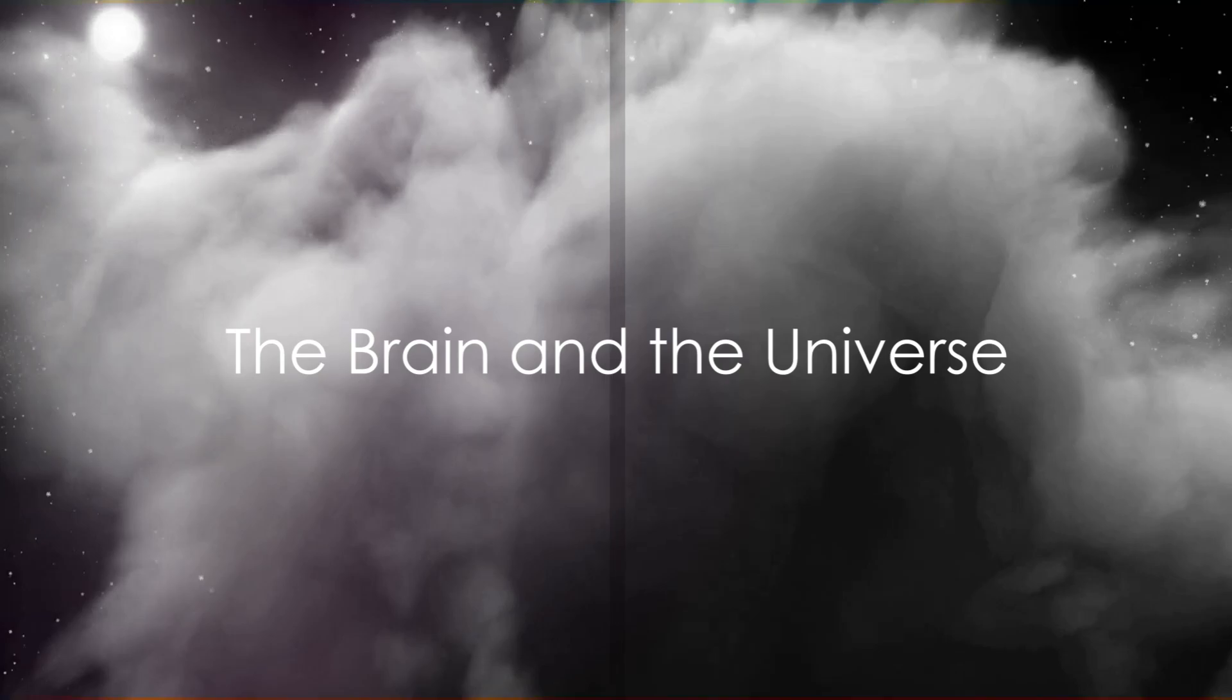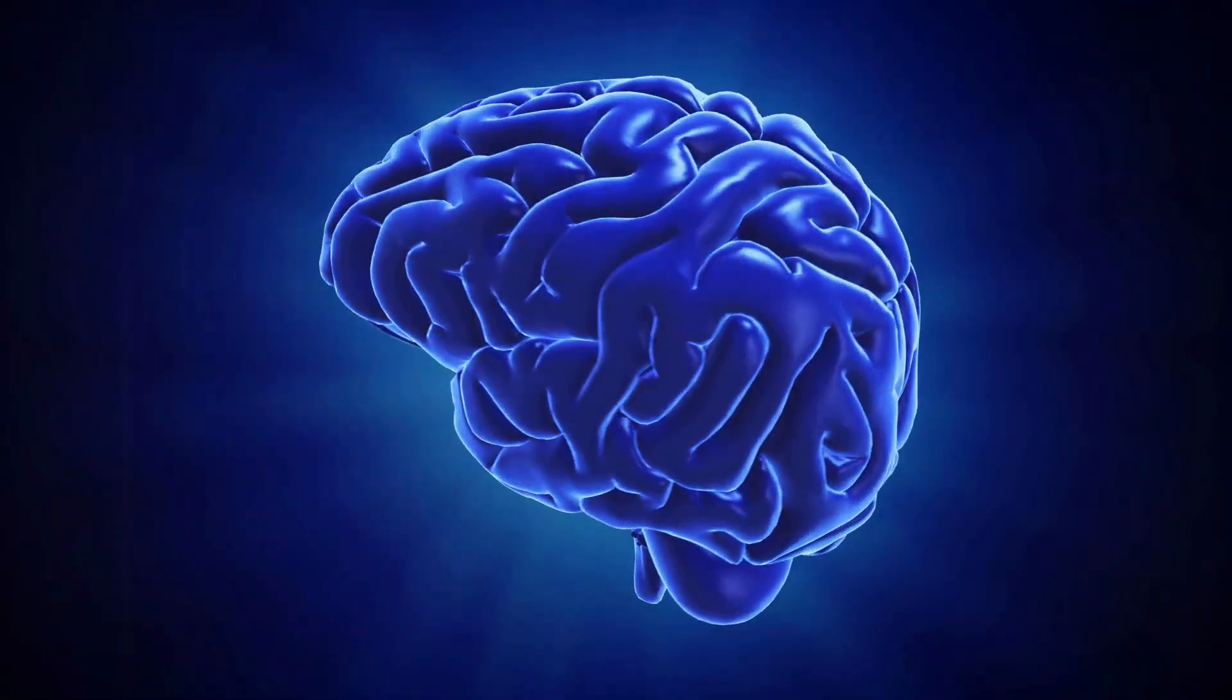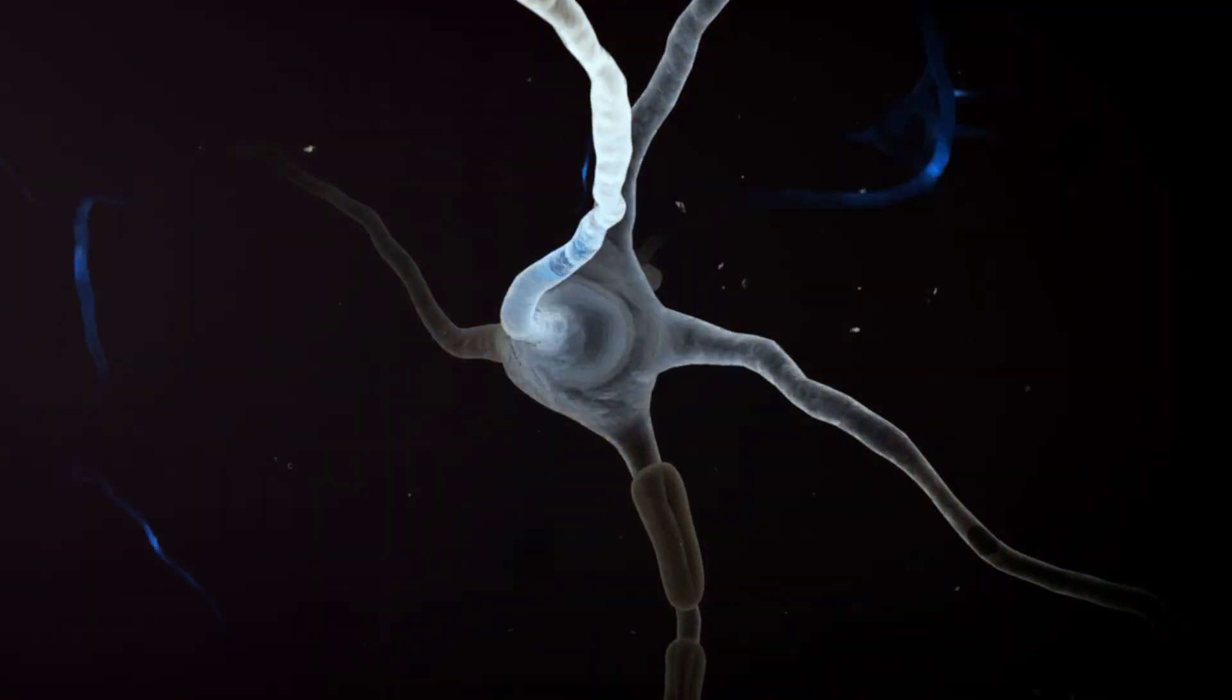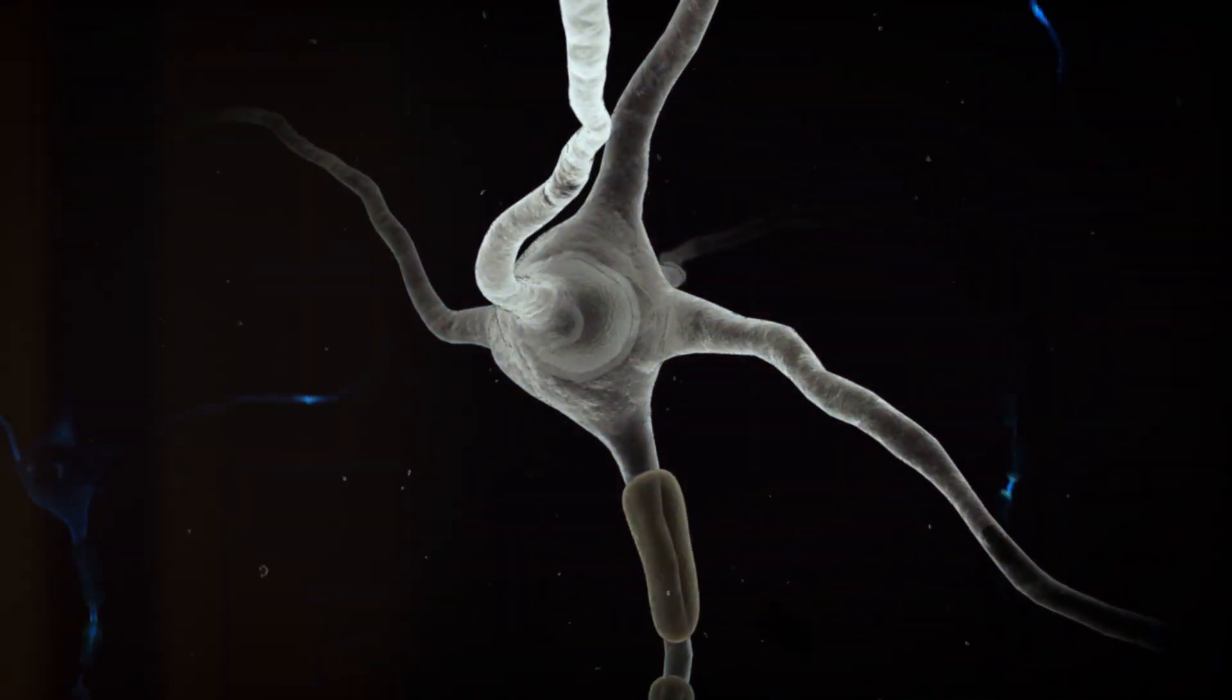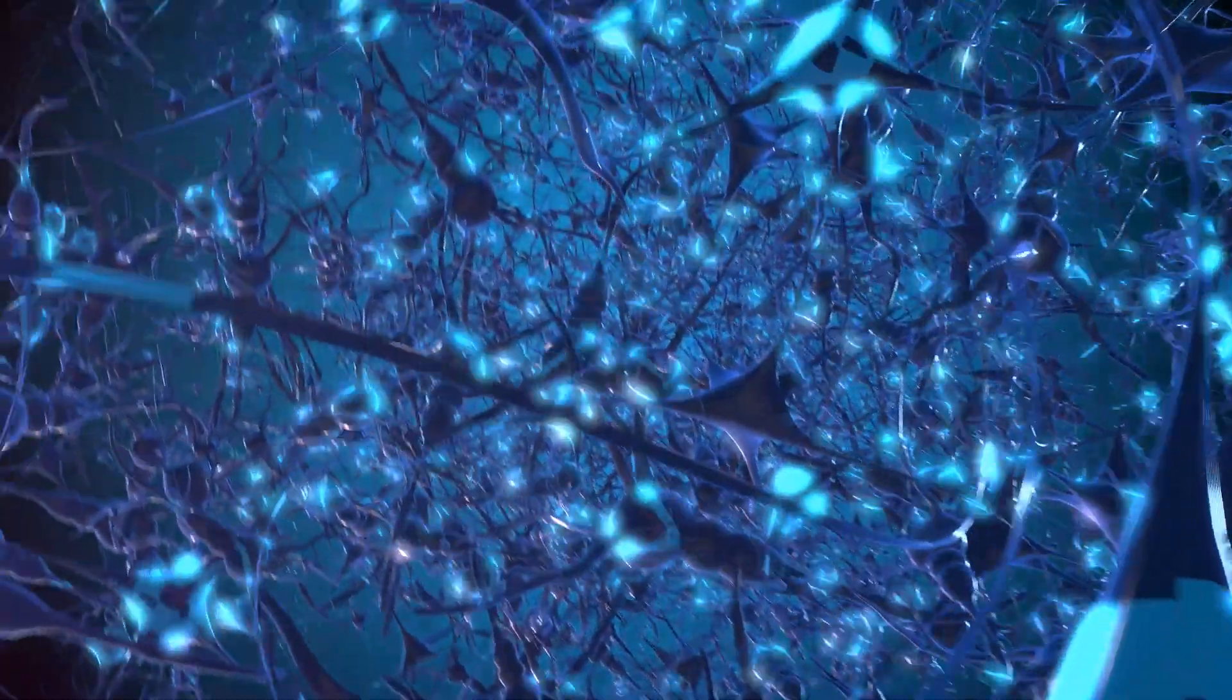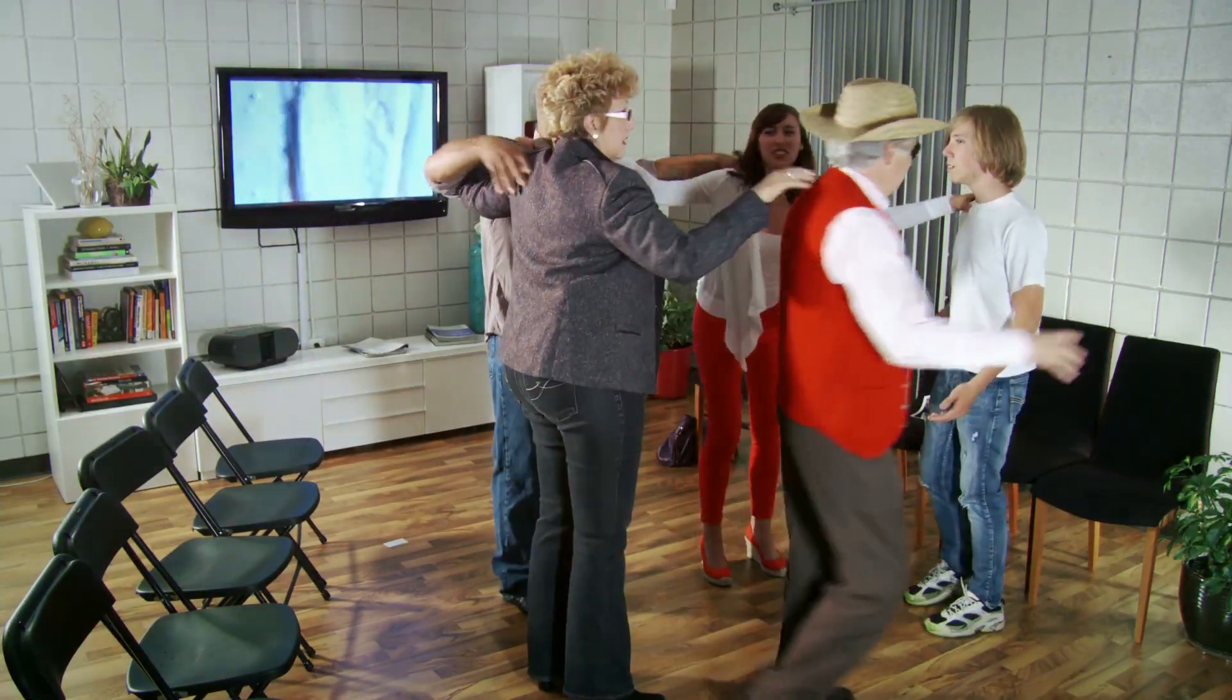Before we dive into the paradox, it's essential to understand two fundamental aspects: our brain and the universe. Let's start with the brain, the command center of our perception. It's an intricate network of approximately 100 billion neurons, each connected by synapses to several thousand other neurons. These connections, which can be strengthened or weakened over time, are thought to encode our memories and personality.